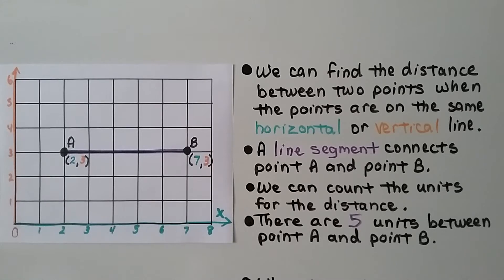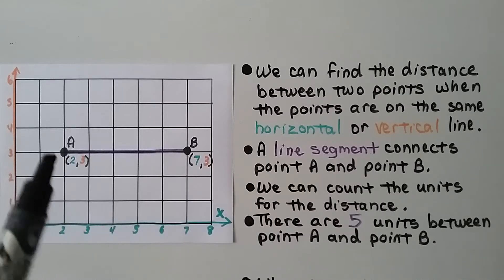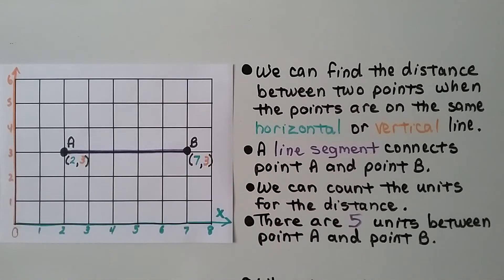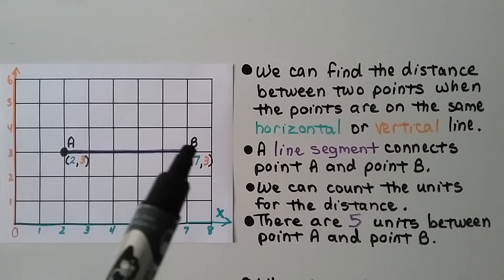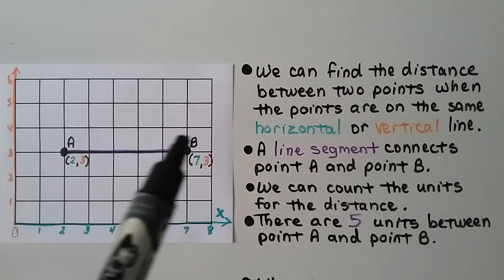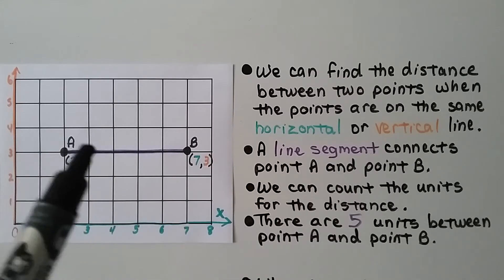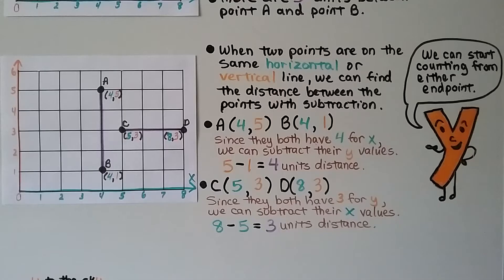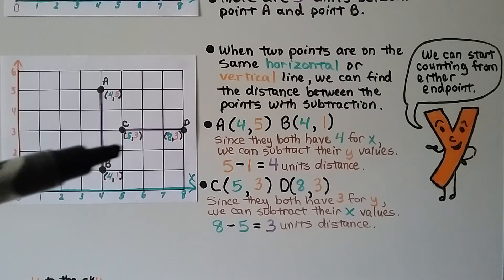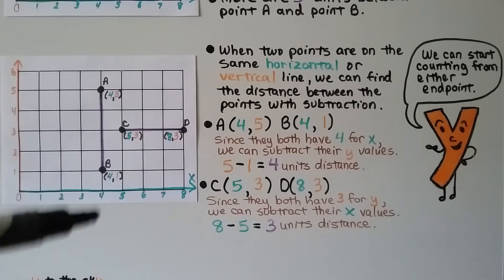We can find the distance between two points when the points are on the same horizontal or vertical line. A line segment connects points A and B. And we can count the units for the distance. It's 5 units between point A and point B. When two points are on the same horizontal or vertical line, we can find the distance between the points with subtraction.